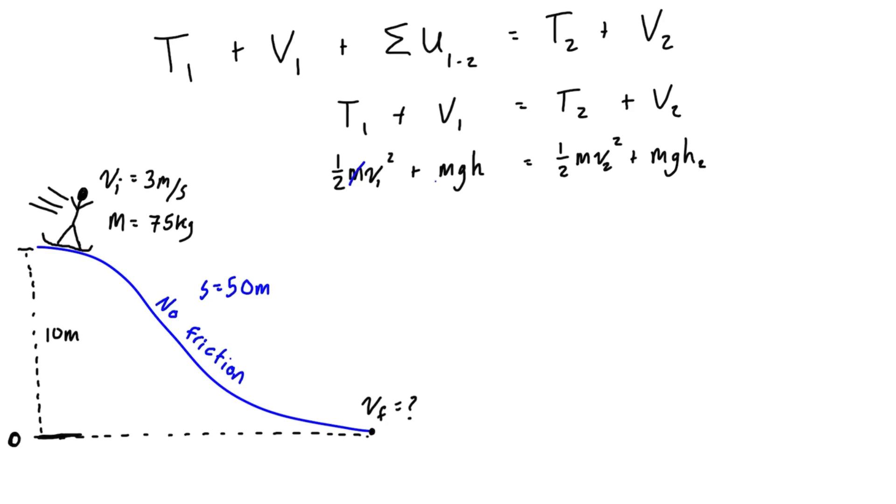All right, so right away we can see that all of the masses are going to drop out. We can divide both sides by m and they're going to be gone. And because h2 is 0 and h1 is 10, this whole term, well that variable is 0 and basically the whole term is going to go to 0.